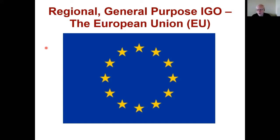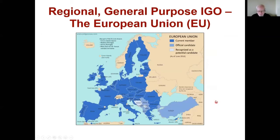Now we're going to turn to the regional general purpose IGO. Before we were looking at a global general purpose organization; now we'll focus on a regional one — the European Union. The EU is always an interesting case study because it's managed to accomplish deeper integration than any other international organization in the world. This is a map of the EU's territory. It's no longer fully accurate because of Brexit — the UK is no longer a member — but the rest would be accurate. Dark blue are current members, slightly lighter blue are official candidates, and very light blue are recognized potential candidates.